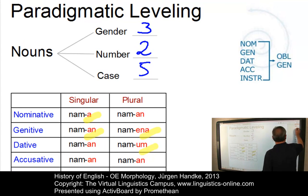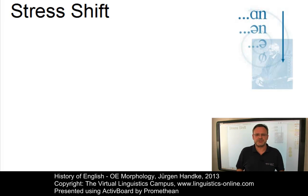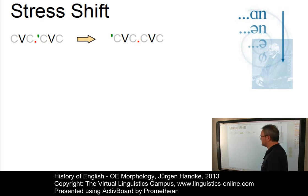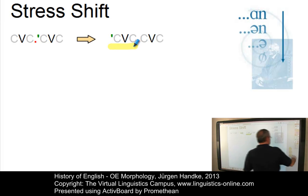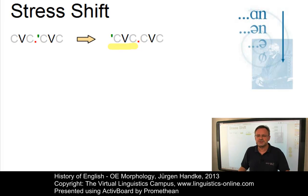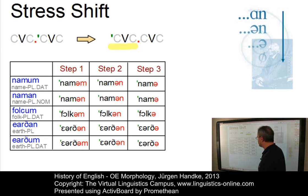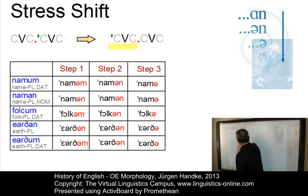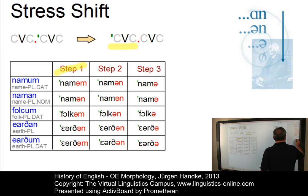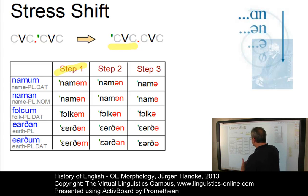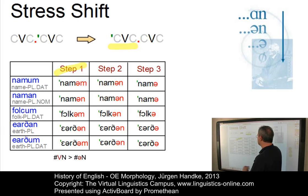An important weakening of the Old English system resulted from a suprasegmental effect. Root syllables were heavily stressed and they occurred primarily in the initial position of words. The stressing of the root syllables leads to a weakening of the remaining syllables. Here are some examples. At stage one, the final vowel of a word is reduced to schwa: namum became namen, naman became namen, falcum became falcum, earthen became earthen.